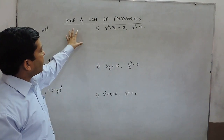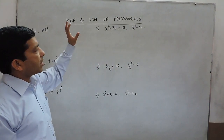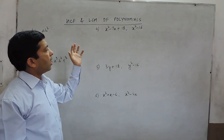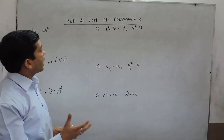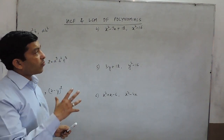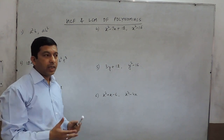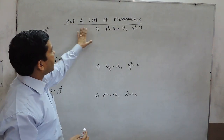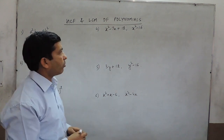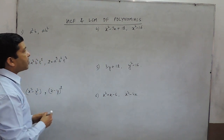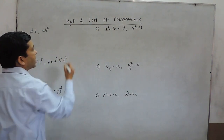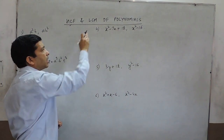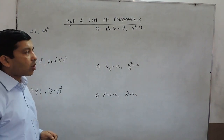Hello everyone. As we have already discussed how to take the common term of an algebraic expression and how to factorize polynomials, if we combine these two things, it becomes the chapter HCF and LCM of polynomials. As we already know, HCF stands for highest common factor and LCM stands for lowest common multiple.